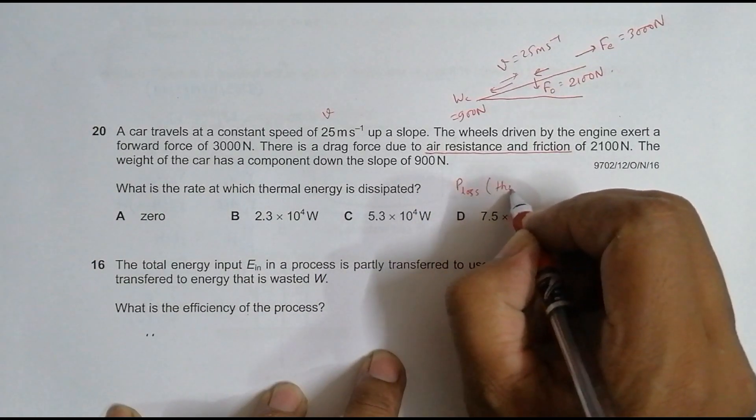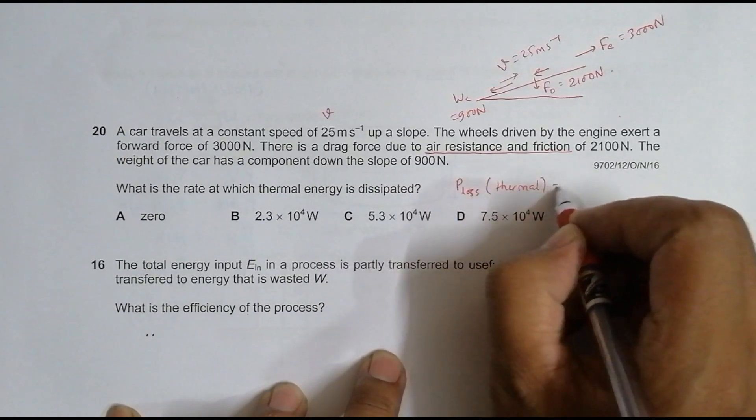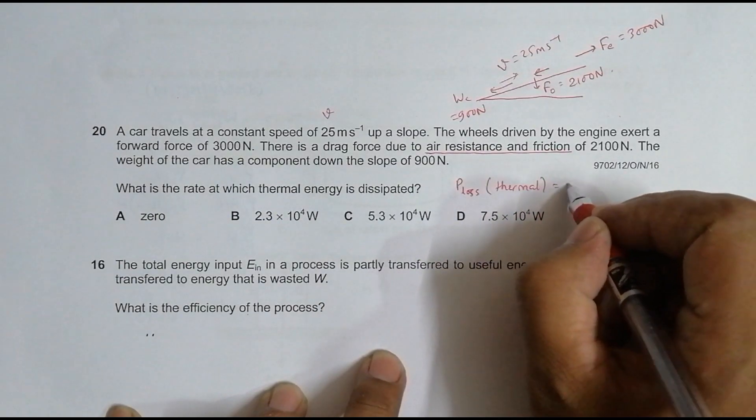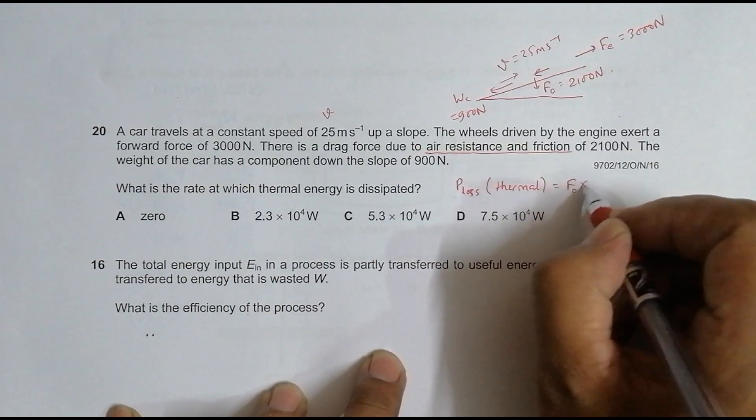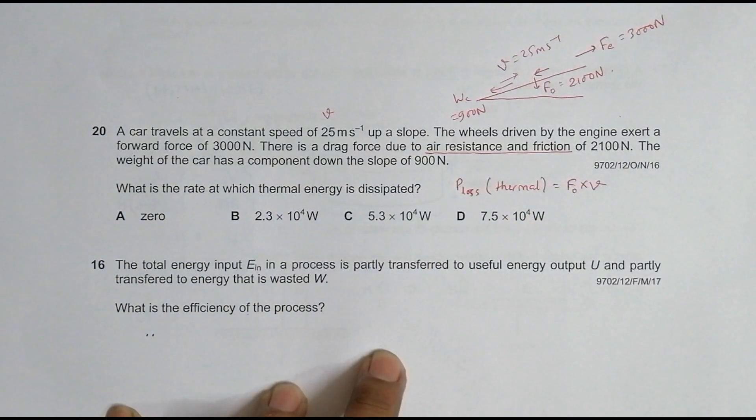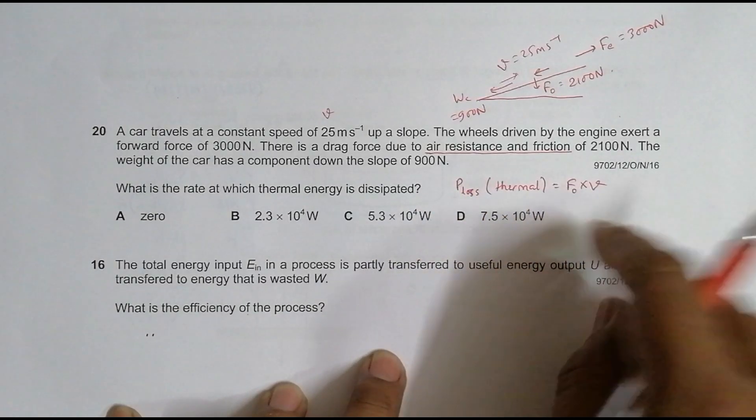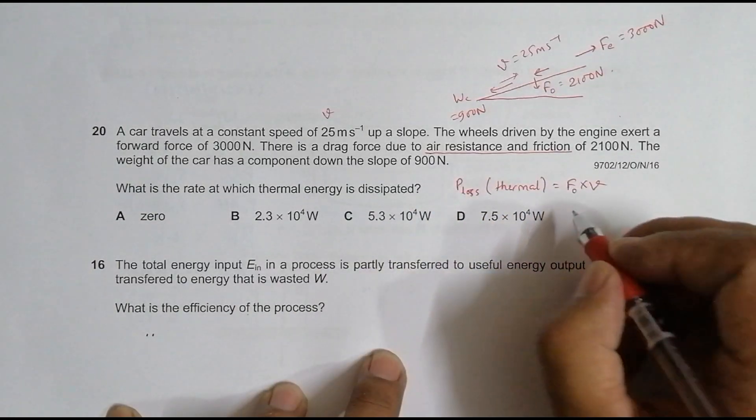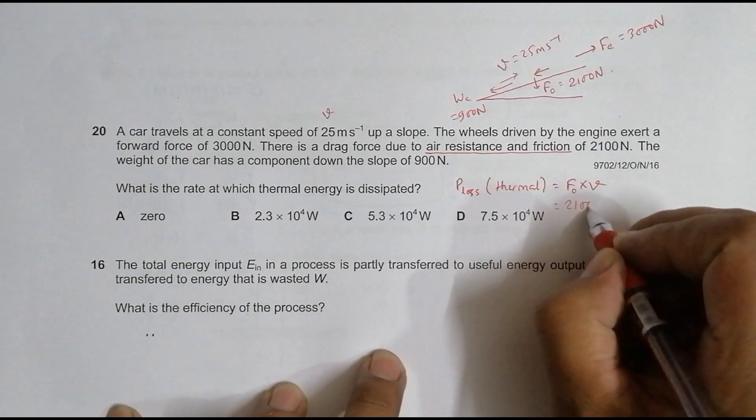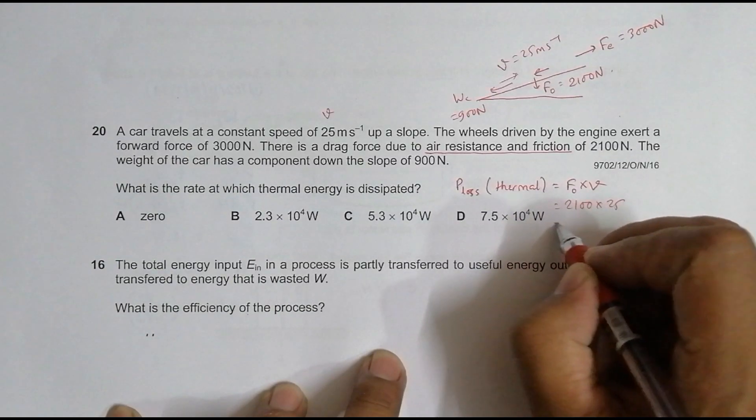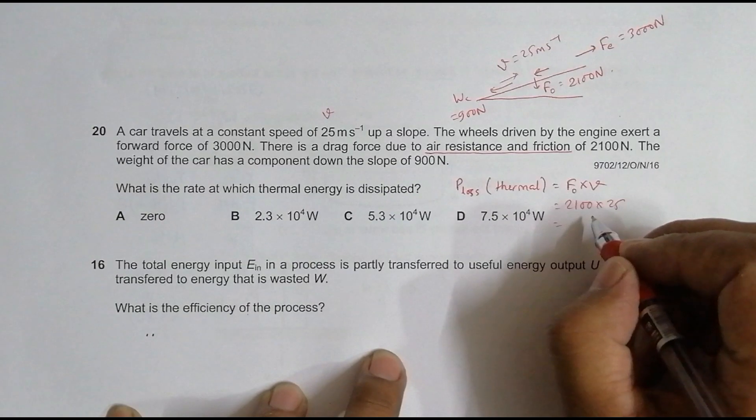Power equals force times velocity. So power loss due to thermal dissipation should be equal to the force causing the dissipation times V. That's equal to 2100 into 25, which becomes equal to, let's say, 21 times 25.